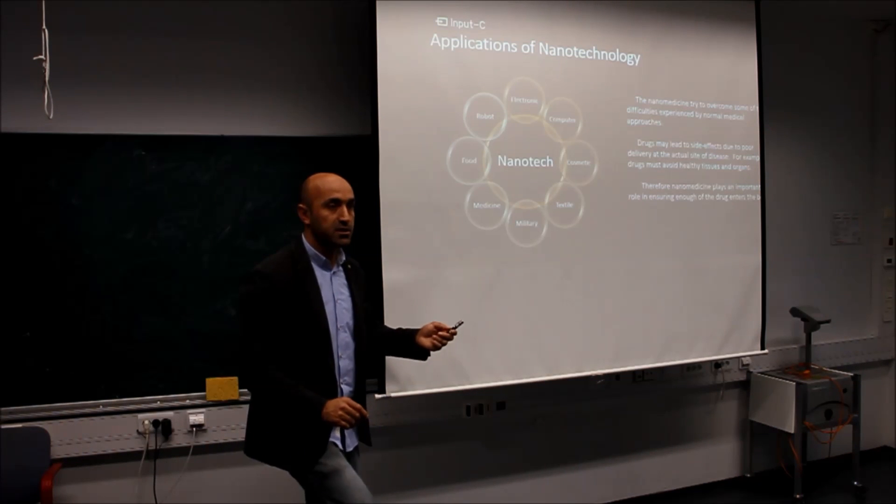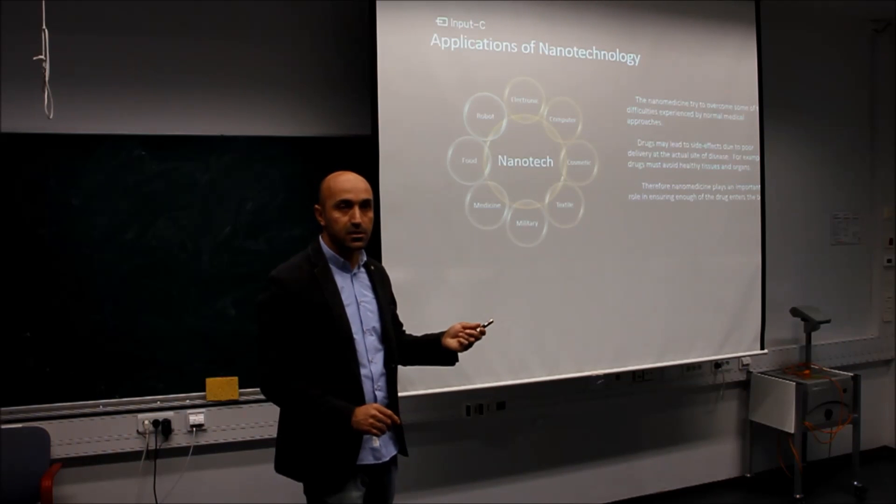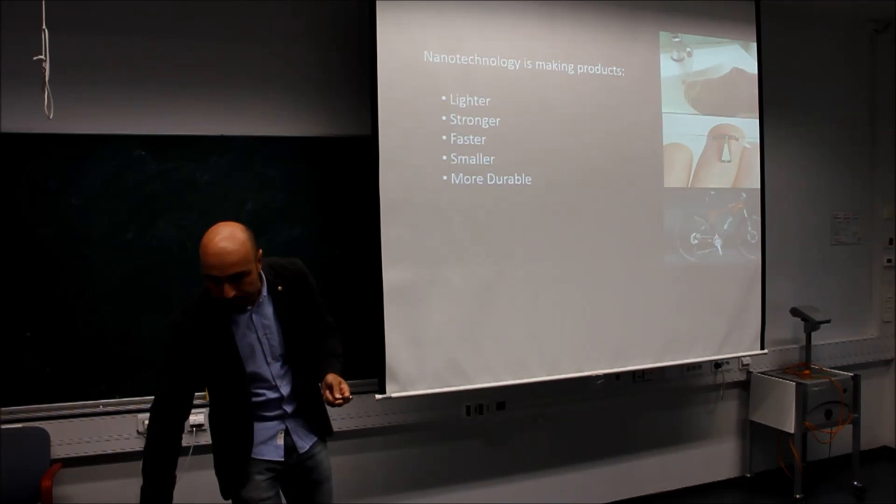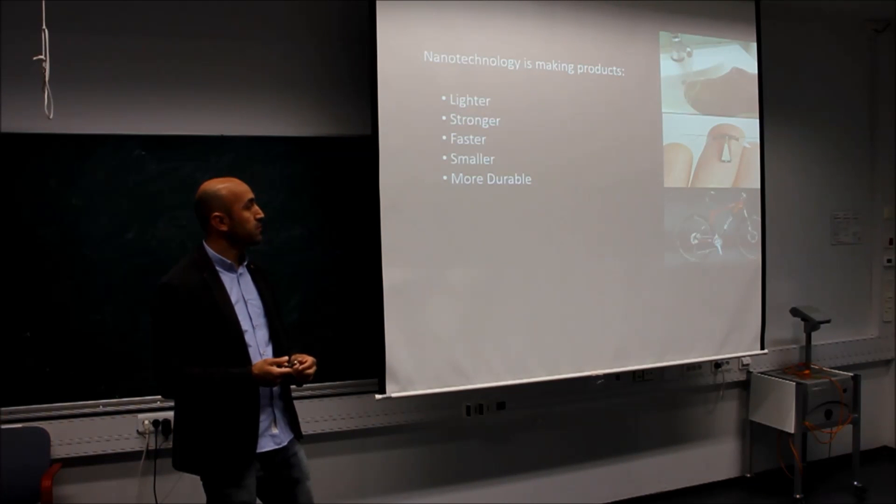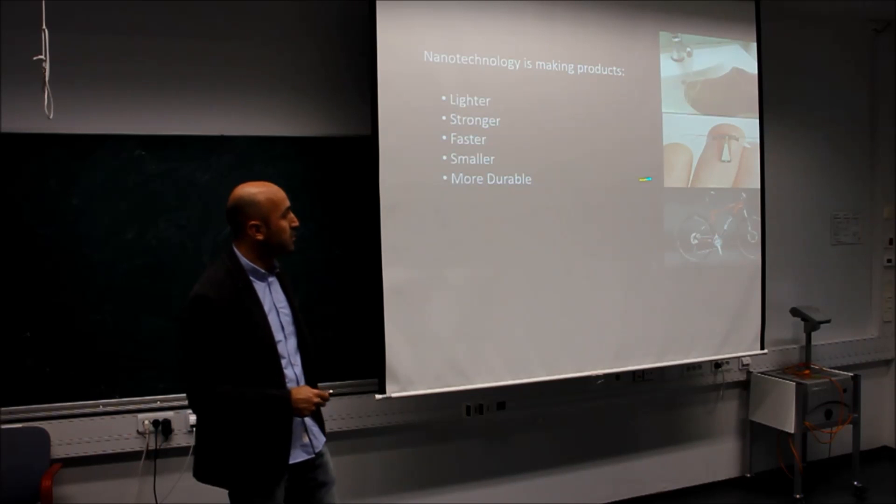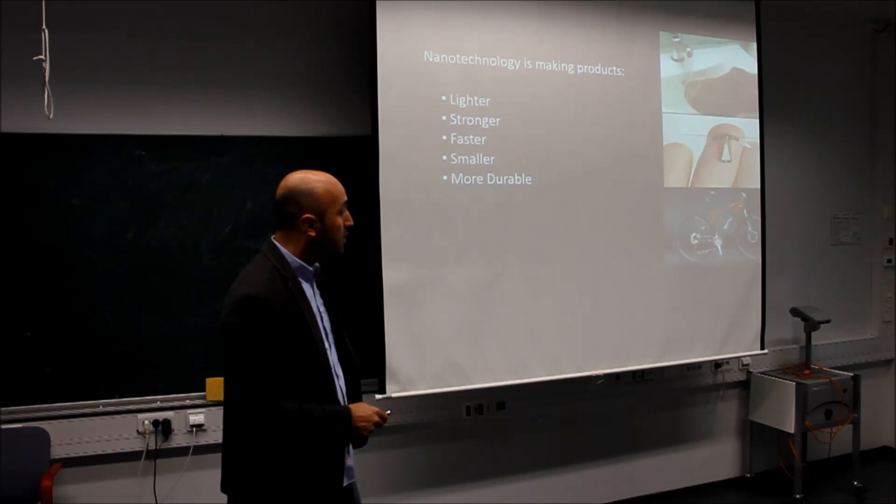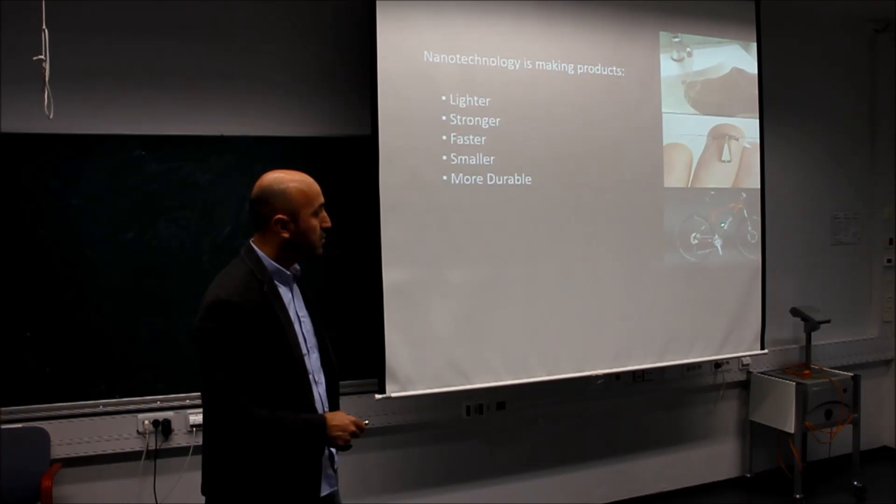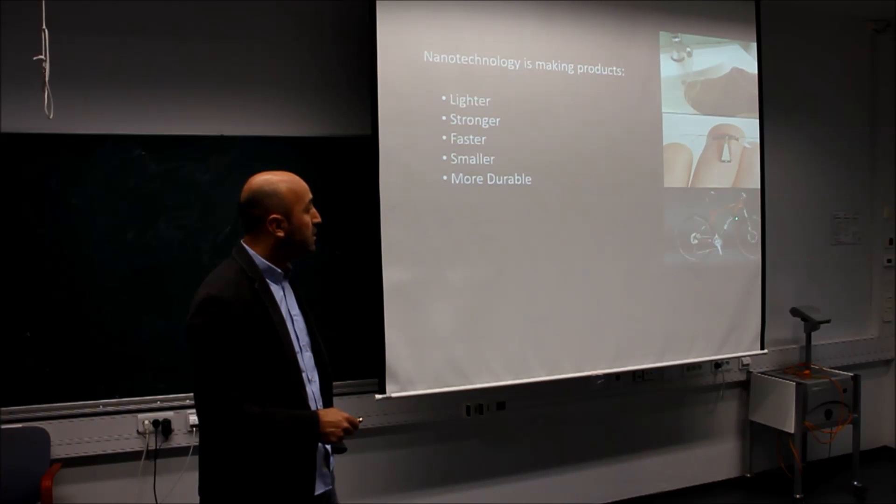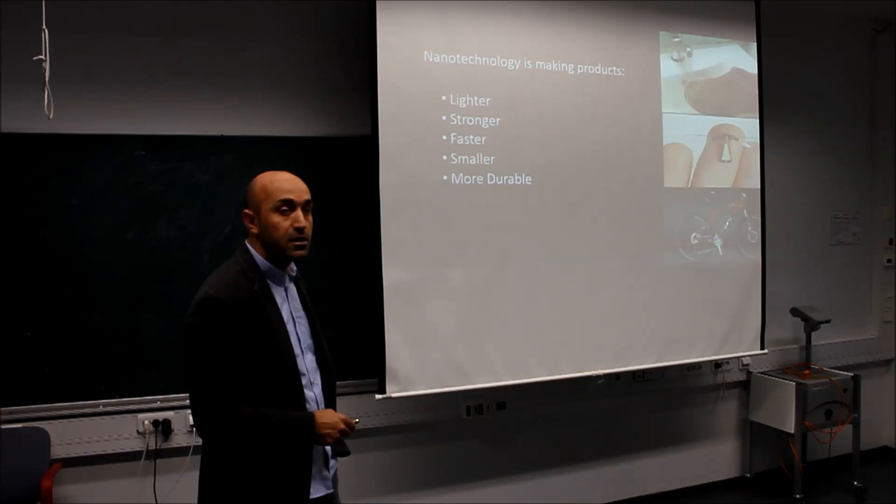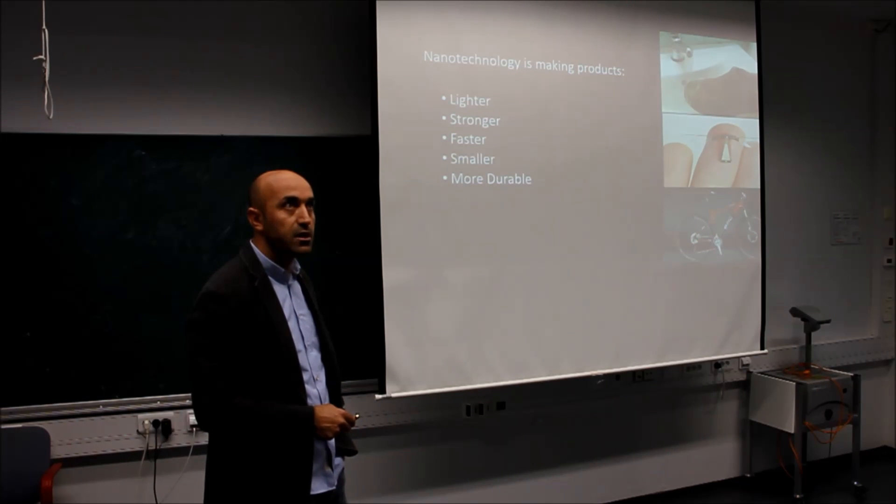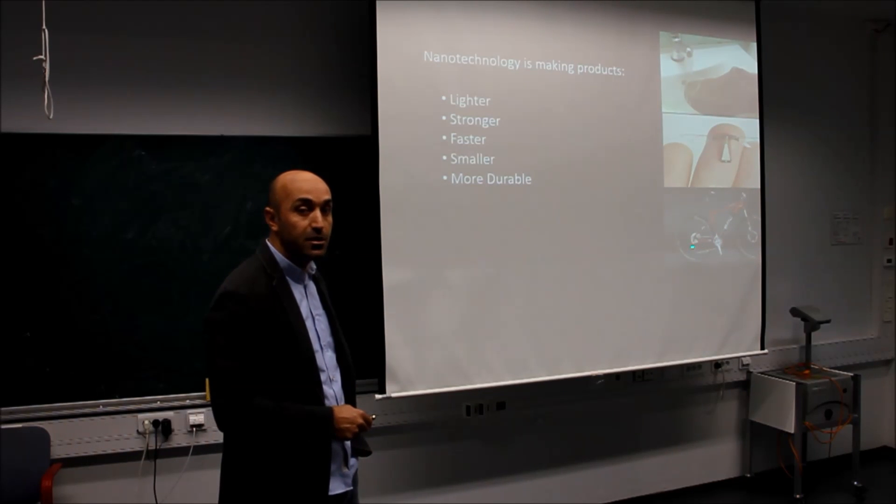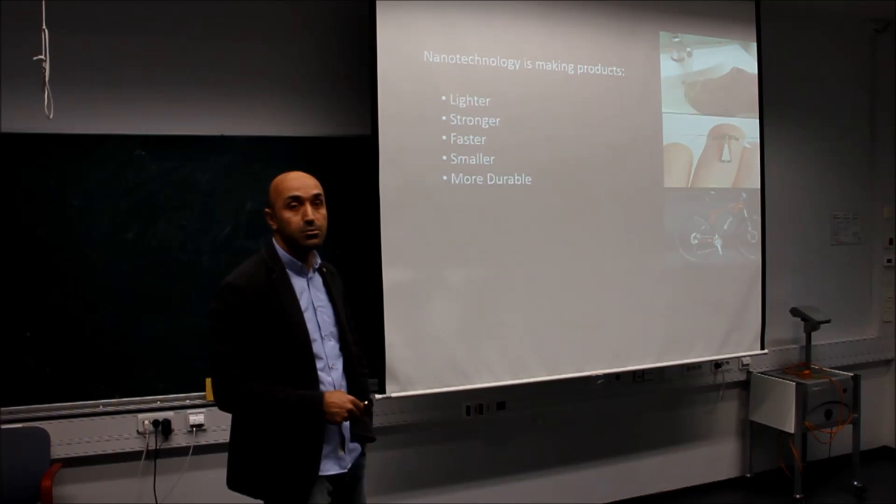This was one example of nanomedicine applications. Nanotechnology is making lighter, stronger, smaller, faster and durable devices. For example, this bicycle is produced by the GMC factory. Its frame is supported by carbon nanotubes. And since its weight is 700-800 grams, it is much lighter than a normal bicycle.